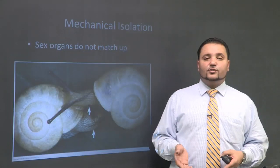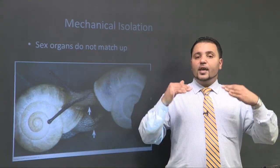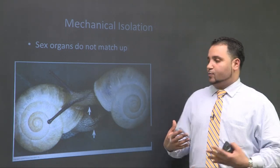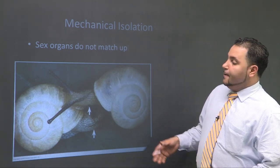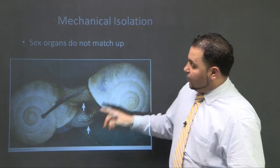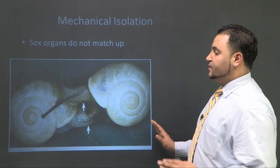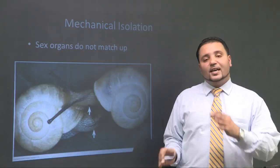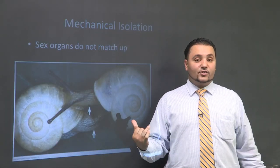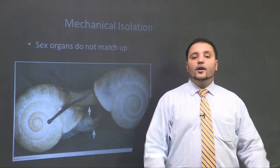Mechanical isolation deals with the gonads and sex organs — are they compatible with one another? A great example is two snails where one has a shell that spirals one way and the other spirals the opposite way. Because they're opposites, they can't line up their sex organs perfectly to exchange gametes. Mechanically it doesn't work, so they won't mate. Another example would be size: a bear and a hamster could never mate because mechanically he can never get his gametes into the female.